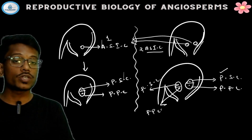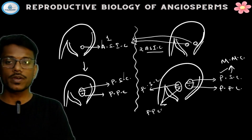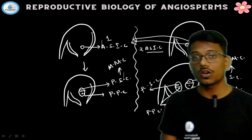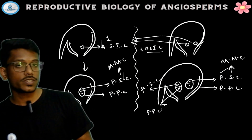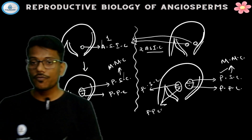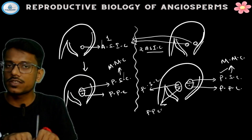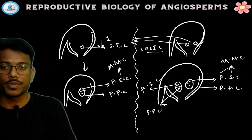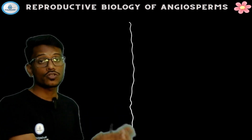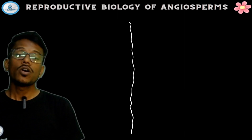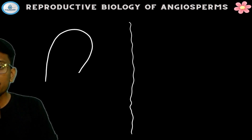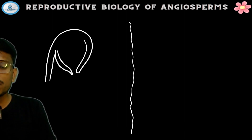The primary sporogenous cell will divide mitotically. It will undergo the process of meiosis, and from each primary sporogenous cell, four cells are formed — these are the megaspore mother cells. The primary parietal cell forms the outer covering layer of the embryo sac. The inner cell becomes the megaspore mother cell.